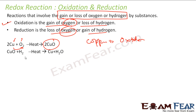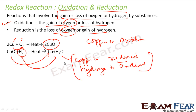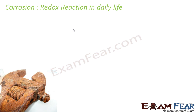When CuO is again heated in the presence of hydrogen, copper loses oxygen — so copper is reduced. Meanwhile, hydrogen was H₂ and it becomes H₂O, meaning hydrogen gained oxygen — so hydrogen is oxidized. Anything that gains oxygen is oxidized; anything that loses oxygen undergoes reduction. If something loses hydrogen it is oxidized; if something gains hydrogen it is reduced.